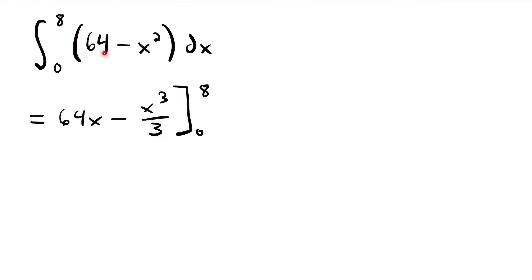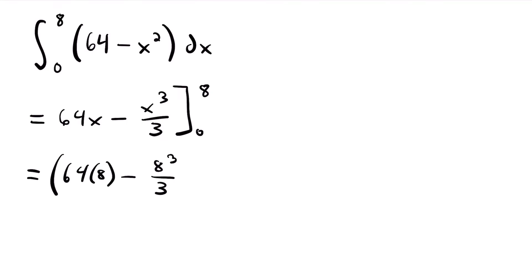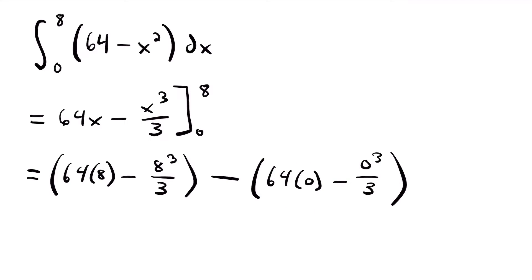Integrating each term: this equals 64x minus x to the third power divided by 3, evaluated from 0 to 8. When you integrate a constant like 64, you multiply it by x. When we integrate x squared, we use the power rule — add 1 to the exponent to get x cubed, then divide by 3. Evaluating: we plug in 8 and subtract the result of plugging in 0. The term from plugging in 0 is just 0 — 64 times 0 is 0, and 0 cubed divided by 3 is still 0.